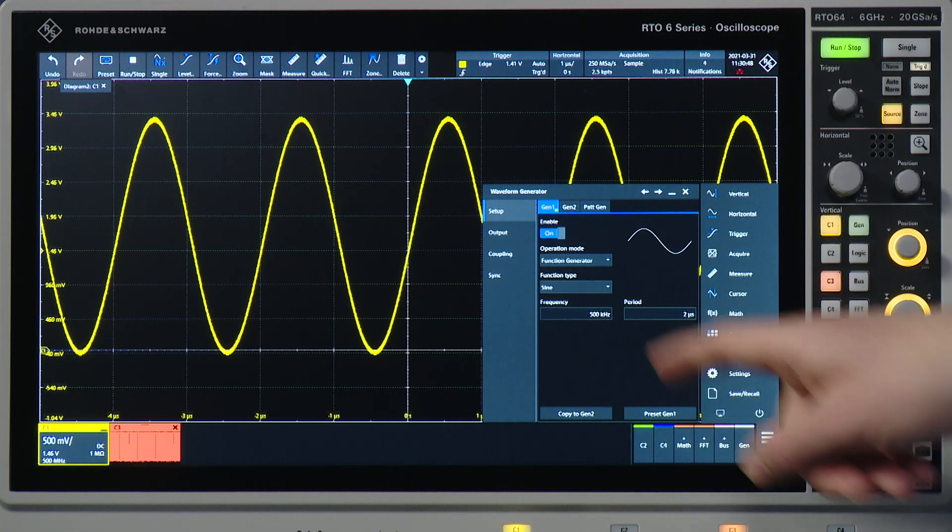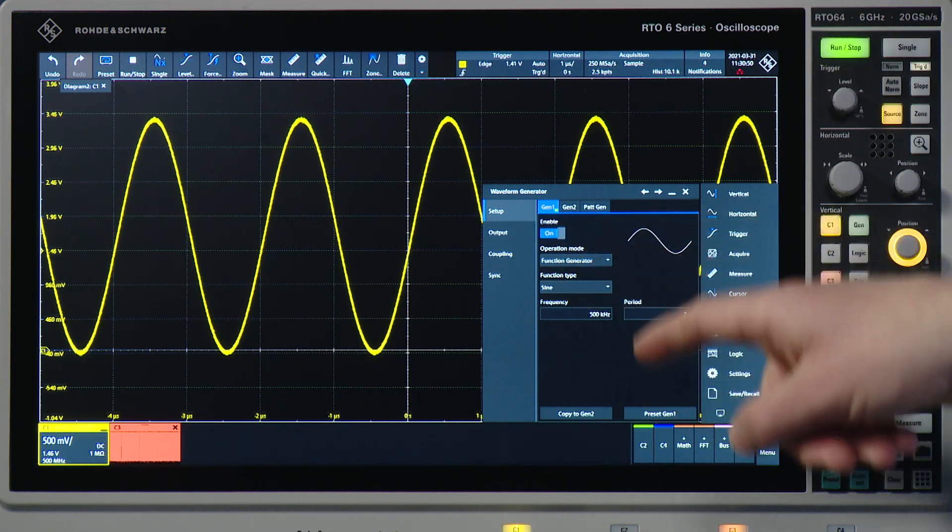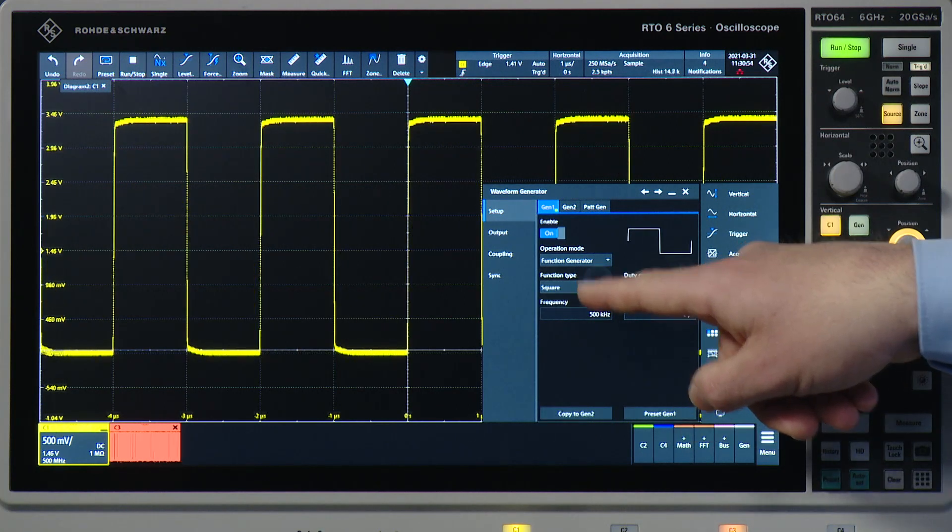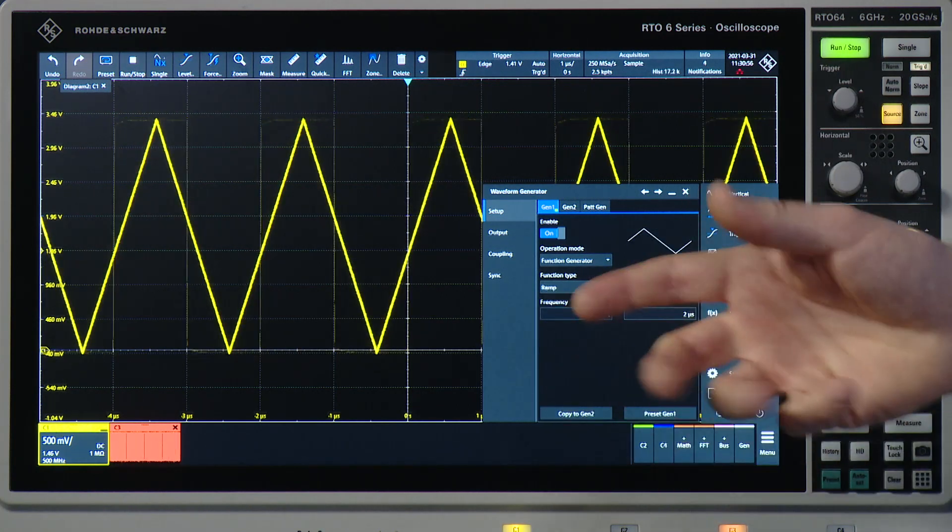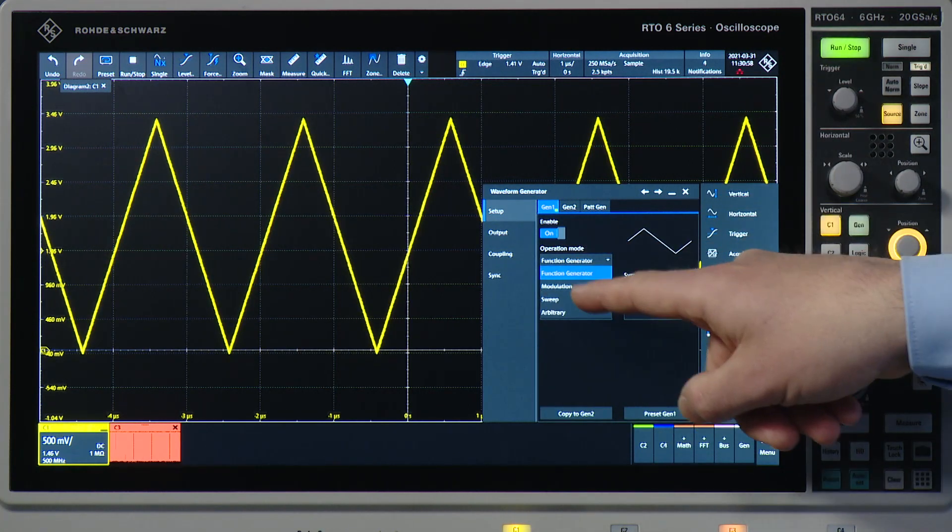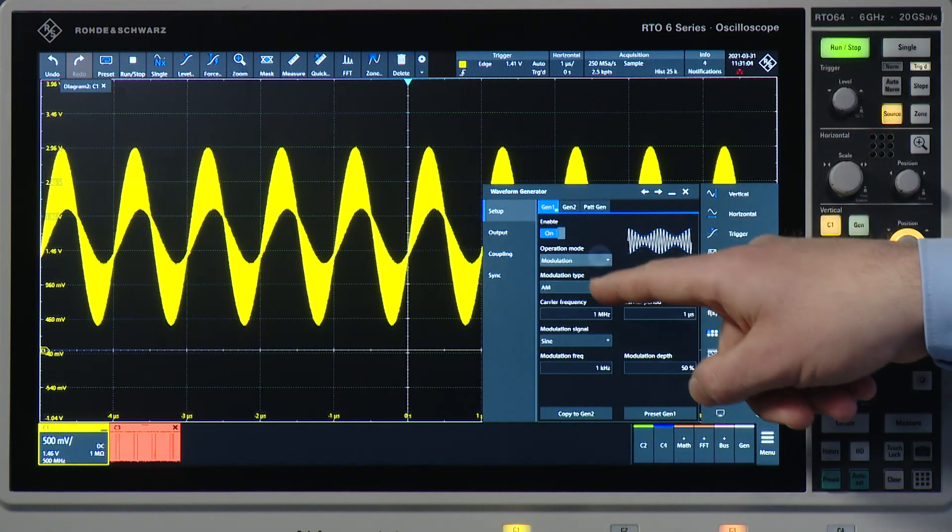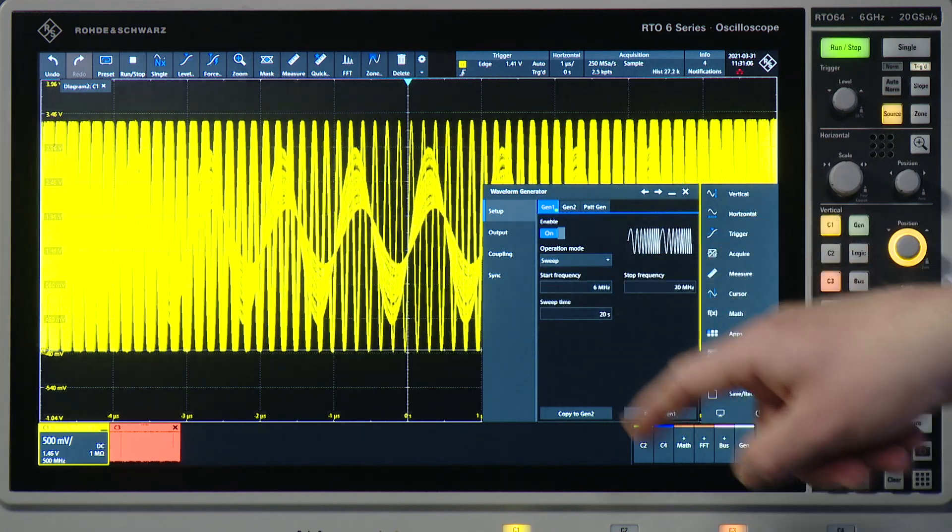Because I have chosen operation mode function generator and function type sine, you can also have a square wave for example or a ramp. You can also select different modulation types AM, FM and so on or a frequency sweep.